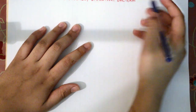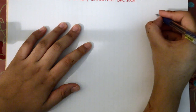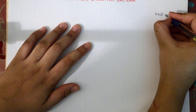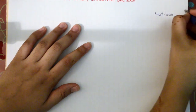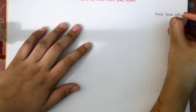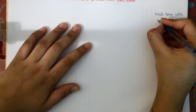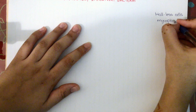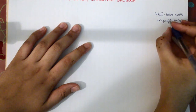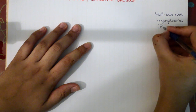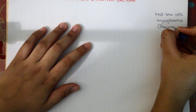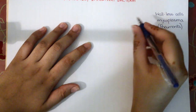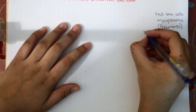Starting here, the heading is 'Clinically Important Bacteria.' The first category is wall-less cells — those are the mycoplasmas. The disease related to mycoplasmas is pneumonia.